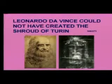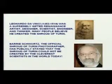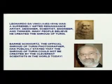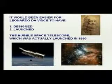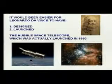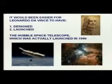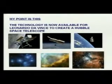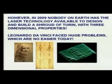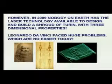Leonardo da Vinci couldn't have created the Shroud of Turin — it's simply not possible. Leonardo da Vinci was a supremely gifted Renaissance artist, designer, scientist, engineer and thinker, and many people believe he created the shroud. However, Barry Schwartz, the official Shroud of Turin photographer, has publicly stated that the shroud could not be created by the cleverest scientists in the world today. In fact, it would be easier for Leonardo da Vinci to have designed and launched the Hubble Space Telescope — launched in 1990, with NASA planning beginning in 1970 — because the laser technology required to create the Shroud is not available today in 2009.